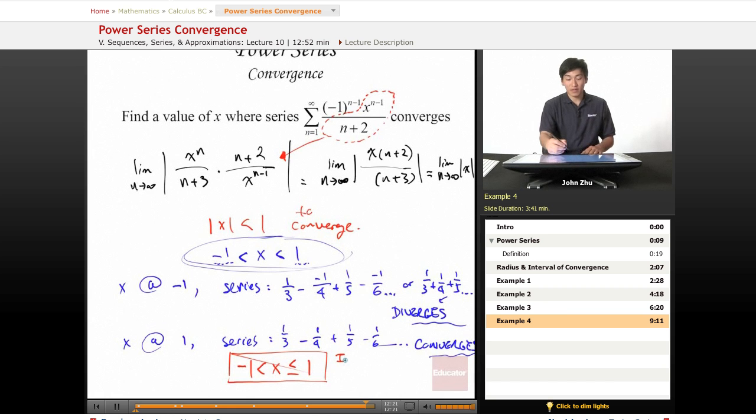The interval of convergence is -1 < x ≤ 1. As long as x is anywhere in this interval, such as x = 0 or x = 1, the series will converge.